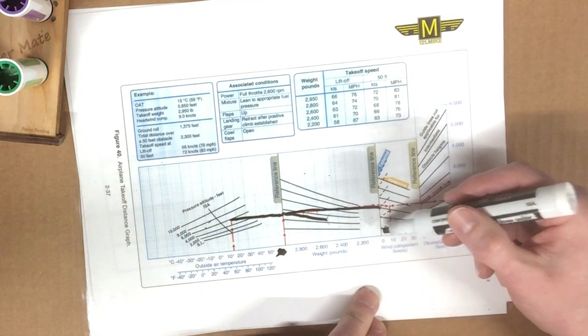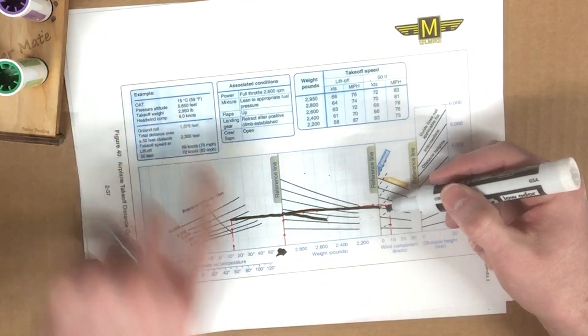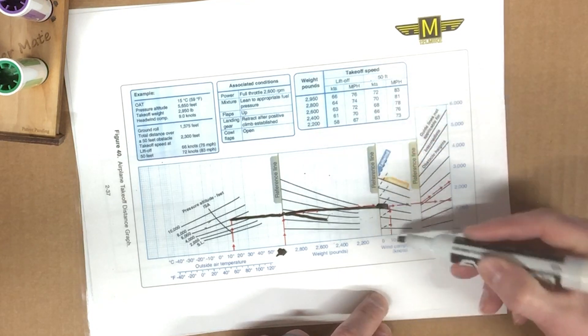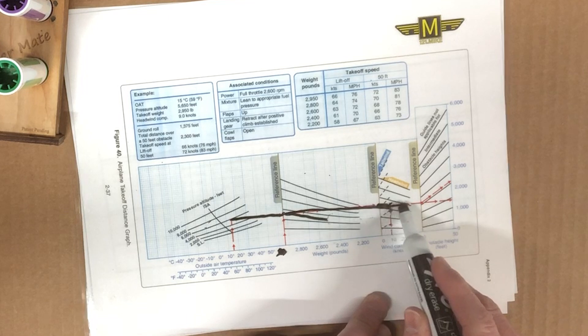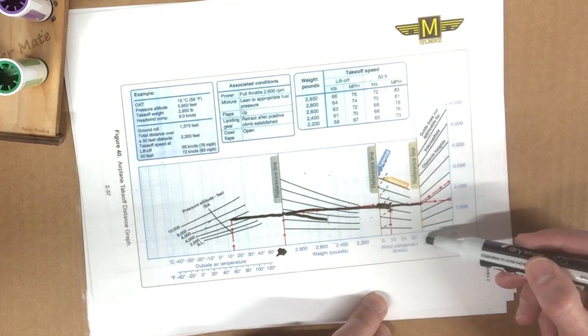So we're coming out up here. Let me erase this one to avoid confusion. And now this is our wind reference line. Okay. Our scenario says that we have a 9-knot headwind. So we're going to fly down parallel along until we hit the 9, which is right there. And then we'll pop out over to here to the reference line for obstacle heights.